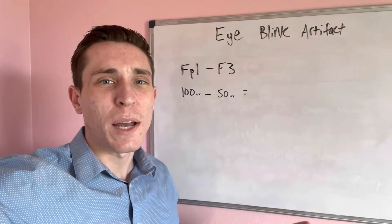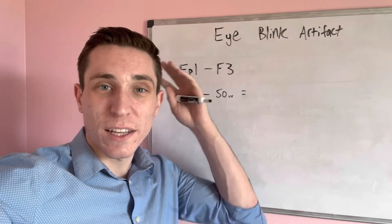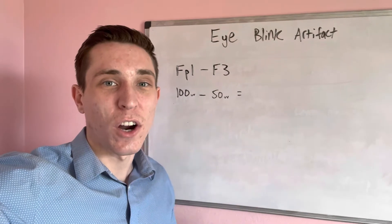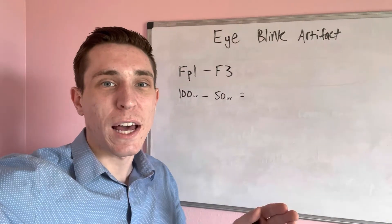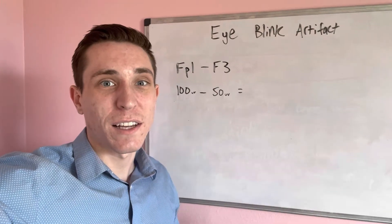Where do eye blink artifacts come from? First you have to understand that the eye, just like the brain, is electrically charged. The front of the eye is positively charged and the back of the eye, the retina, is negatively charged.